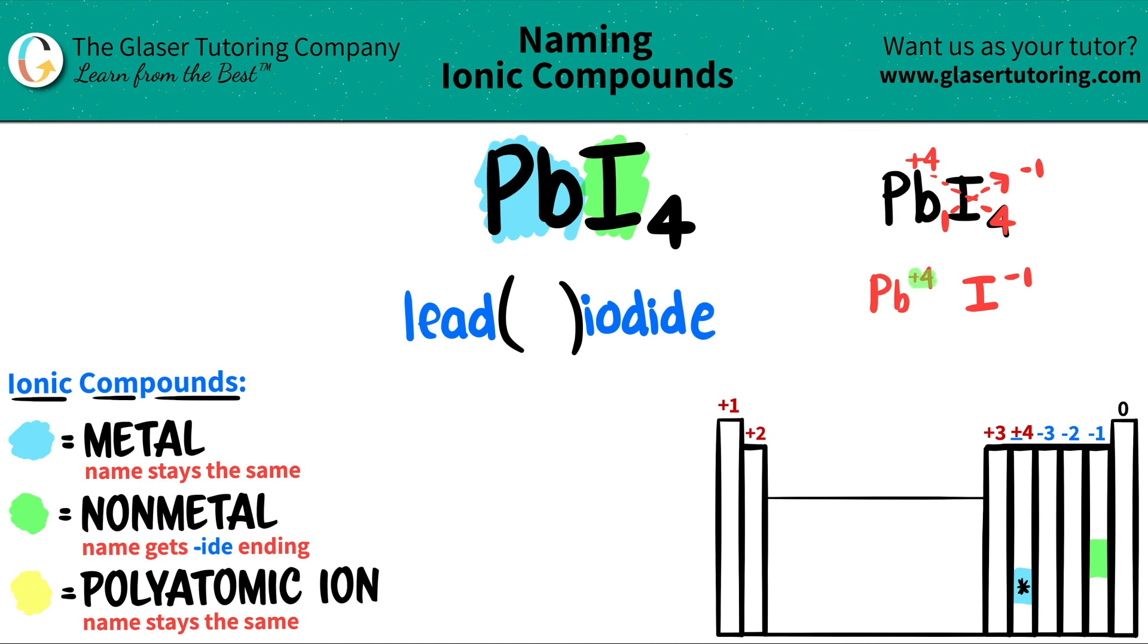And the charge of the lead was a plus four. So I have to write a four in the Roman numeral, which is IV. And there you go. Now you're done.